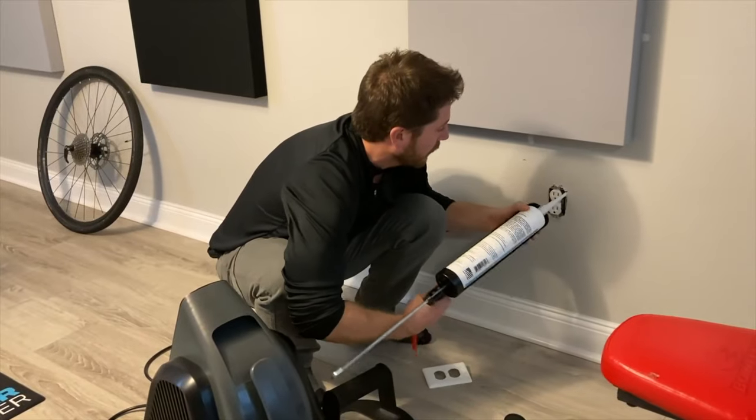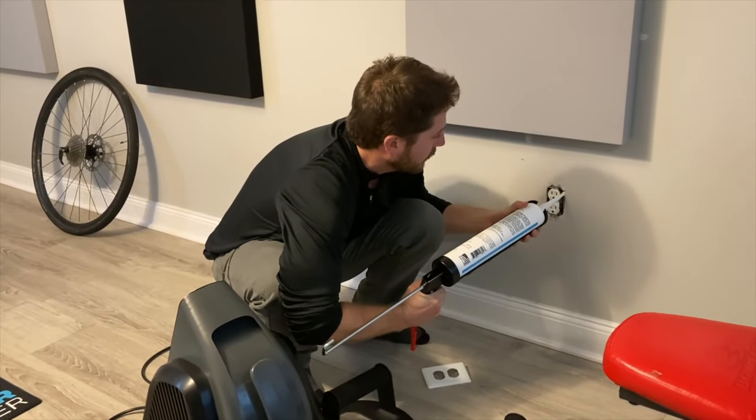Now, if you have a wall that's already completely finished and a product like this isn't really something that you can use, then the only thing that you can do without completely removing the drywall and getting behind that box is to add some acoustical sealant around the electrical outlet.